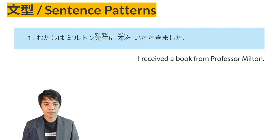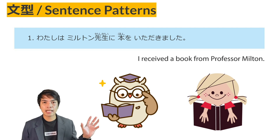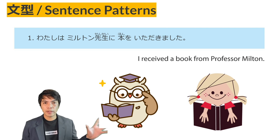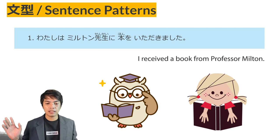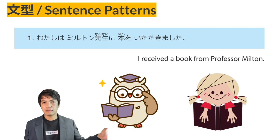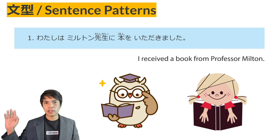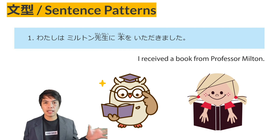Let's read Sentence Pattern No. 1: Watashi wa Merton sensei ni hon o itadakimashita. The expression itadakimashita is the polite way — the polite term — for the verb moraimashita. Based on our previous lessons, the pattern is: object wo moraimashita, meaning the speaker receives something from the giver. So watashi wa itadakimashita — I receive — is now more polite.